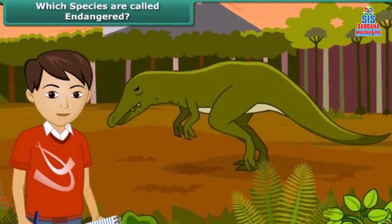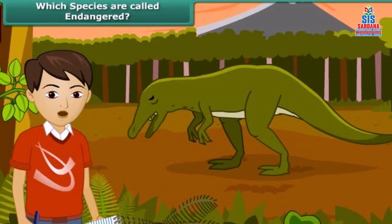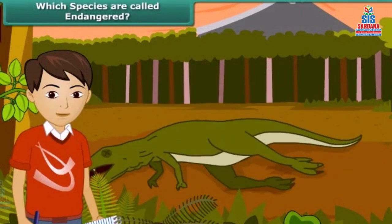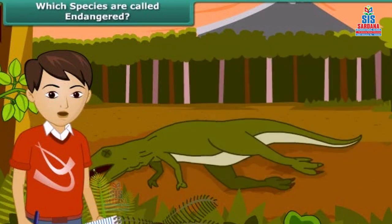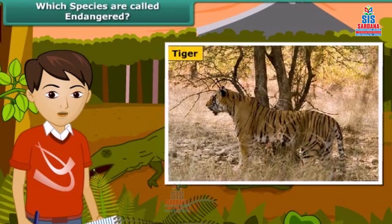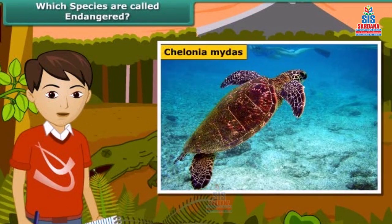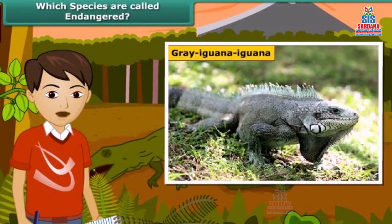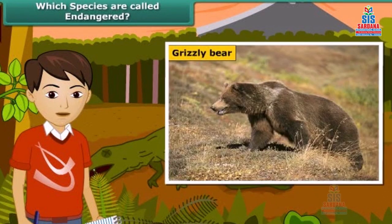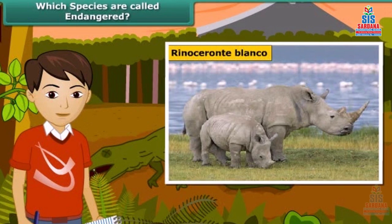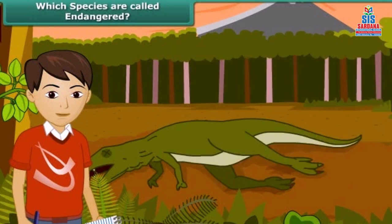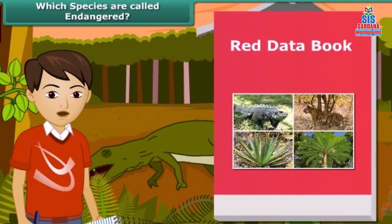You must have heard about dinosaurs — they existed hundreds of years ago but are extinct now. Many animals and plants have become extinct, whereas some are on the verge of extinction. Species whose numbers are diminishing to a level that they might face extinction are known as endangered species. Red Data Book is the source book which keeps a record of all the endangered animals and plants.